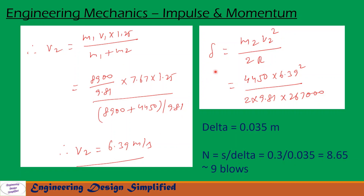The distance traveled by the pile in a single blow is δ = m2·v2² / (2r), neglecting w2. Substituting all values gives δ = 0.035 m. To drive the pile to 0.3 m, we divide 0.3 by 0.035, which gives 8.57, rounded up to 9. Therefore, 9 blows of the hammer are required to drive the pile to a depth of 0.3 m.